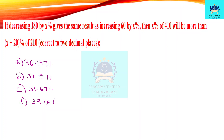Second problem: if decreasing 150 by x percentage gives the same result as increasing 60 by x percentage, then x% of 410 will be more than x plus 20% of 210 — correct to two decimal places. How do we approach this?